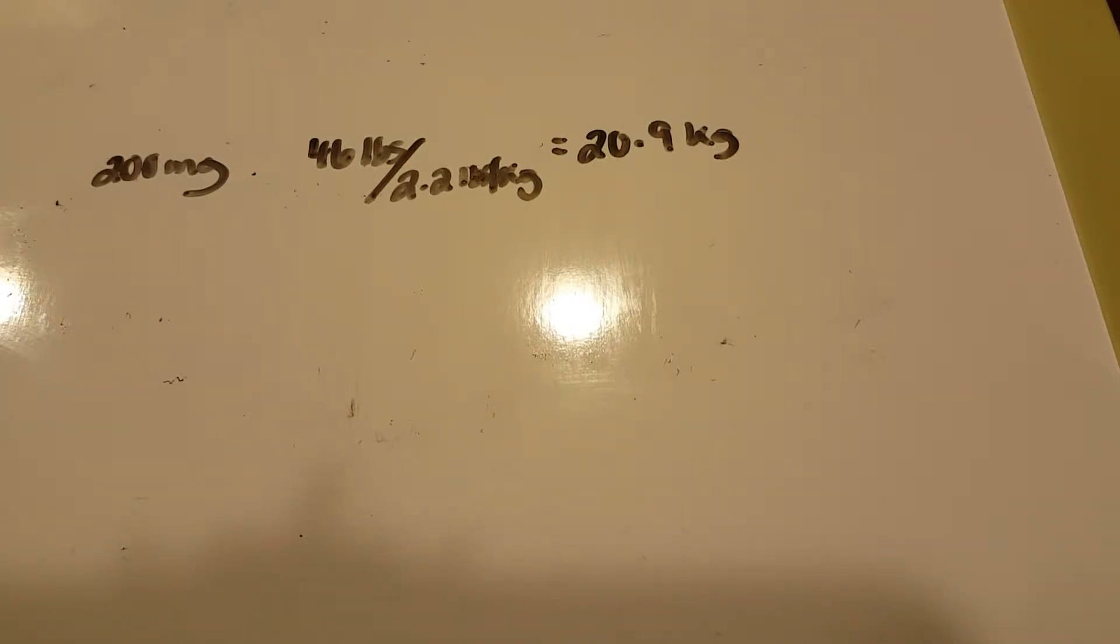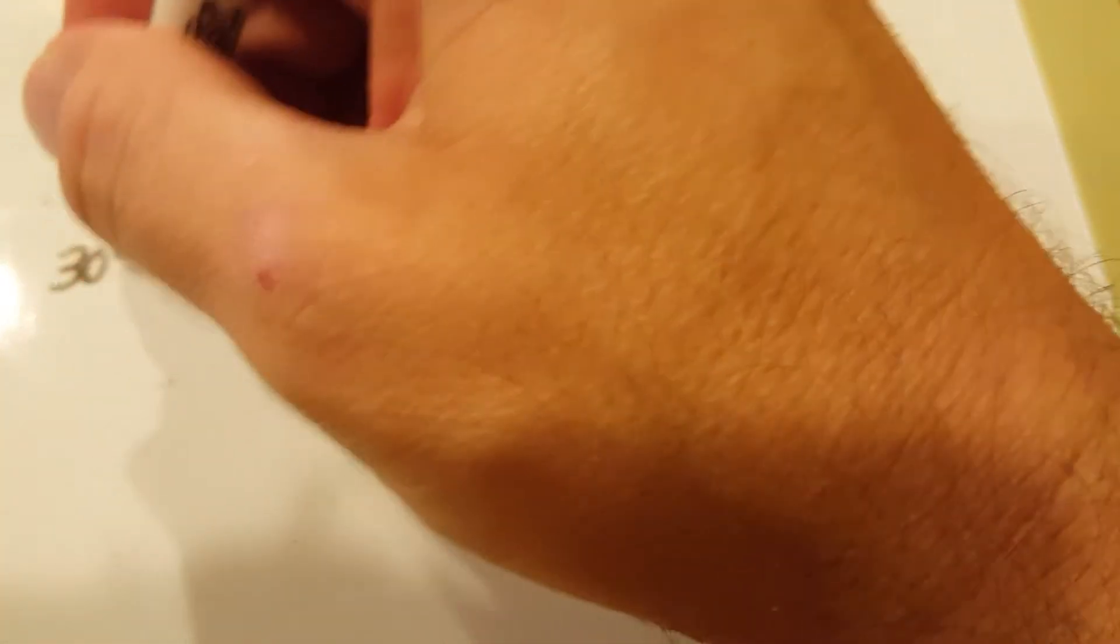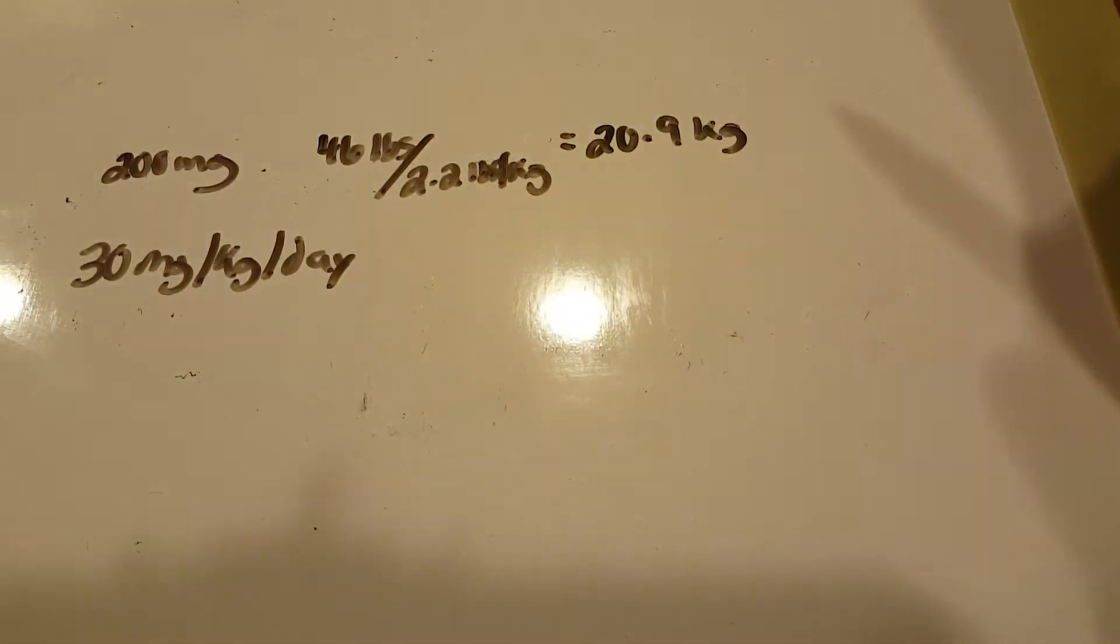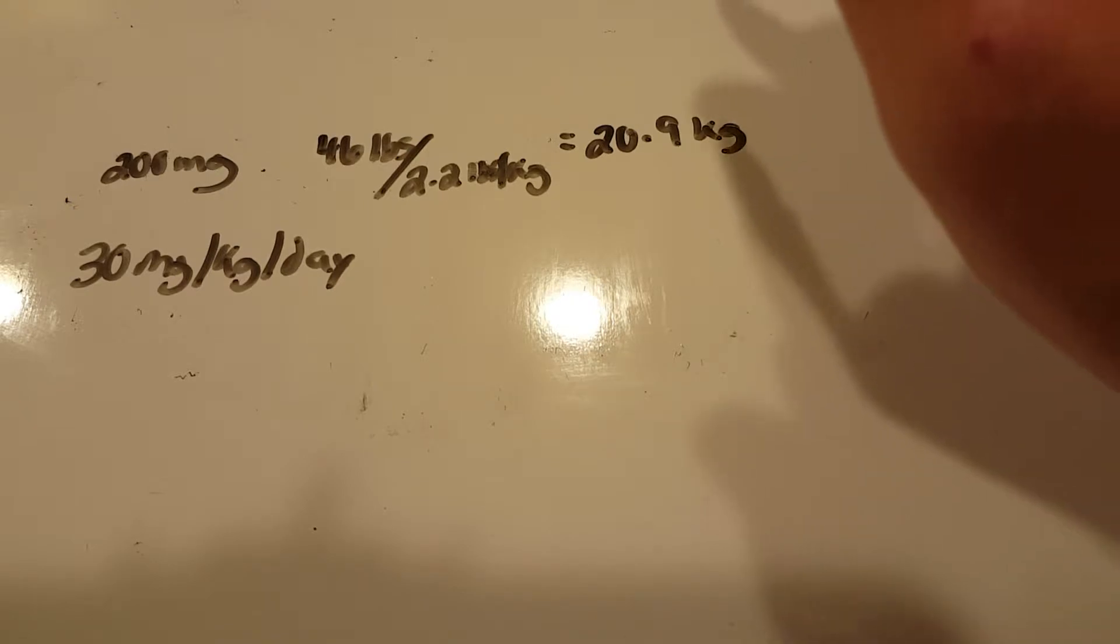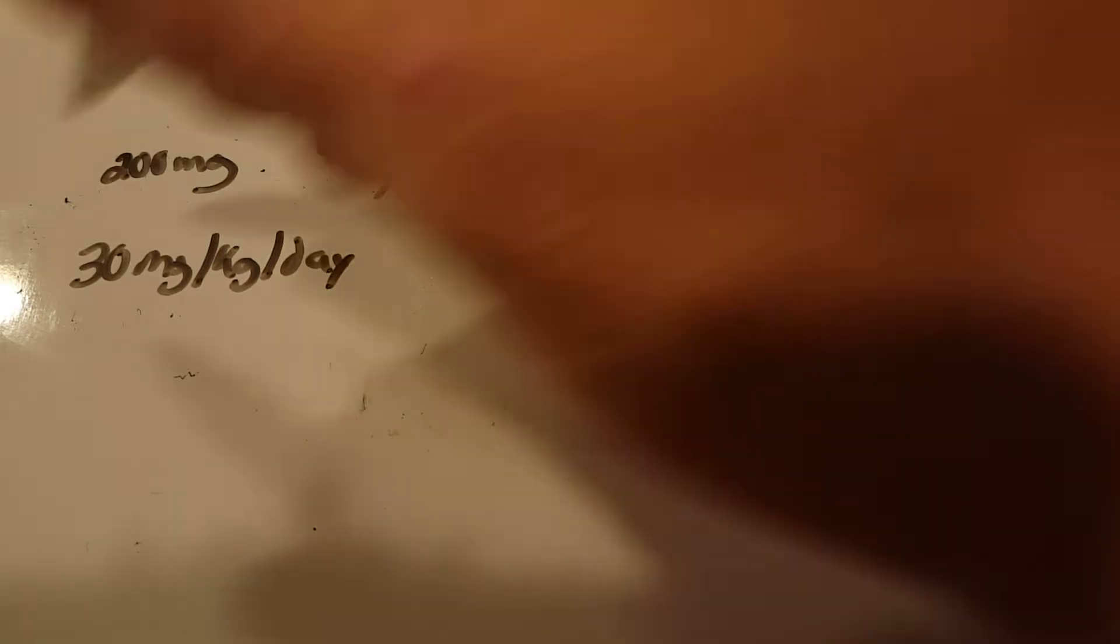And we're going to look at the dose range. It tells me 30 milligrams per kilogram per day. So it's not really a range. This is the order. So 30 milligrams per kilogram per day, and it says divide it every eight hours. So how many times does eight hours occur in a day? The answer is three.